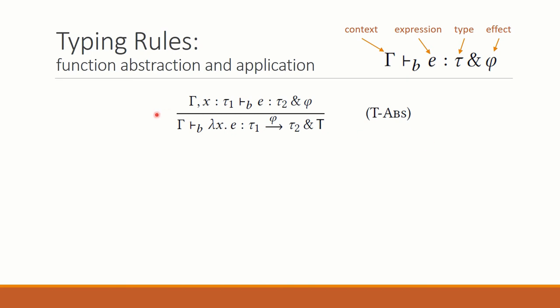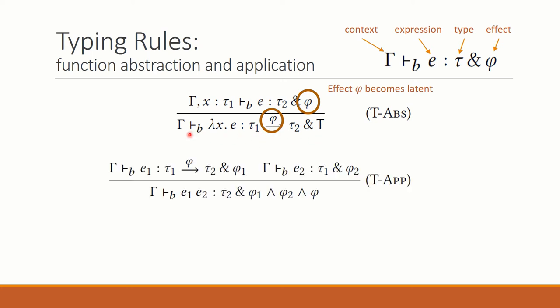Here's the rule for function abstraction. The type of this function lambda x dot e is tau 1 to tau 2. But what happens to the effects? Well, if we evaluate e, we get an effect phi. And now this becomes a latent effect, which only is released if we apply this function.